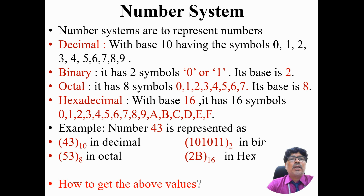In binary, the base is 2, having 2 symbols: 0 or 1. Using these 2 symbols, we can represent any number. In octal, we have base 8, which has 8 symbols: 0 to 7. In the hexadecimal system, the base is 16, which has 16 symbols: 0 to 9 and A, B, C, D, E, and F.